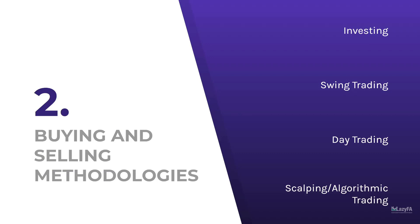That covers the basics of what a stock is, how the market works, and why companies issue stock. But what about the elephant in the room — how do you know when to actually buy and sell to make money? The truth is, nobody knows with 100% certainty when to buy and sell. But there are basically four different ways you can make money in the stock market, and the difference between these buying and selling methodologies lies primarily in the amount of time you hold what you've bought.